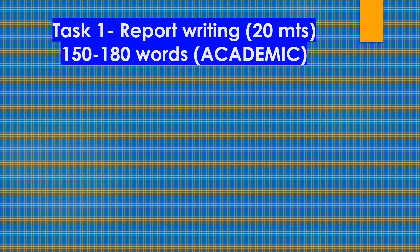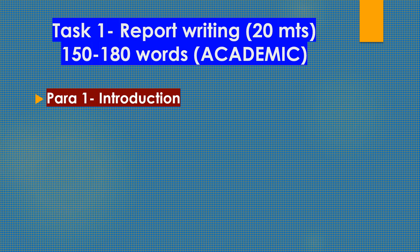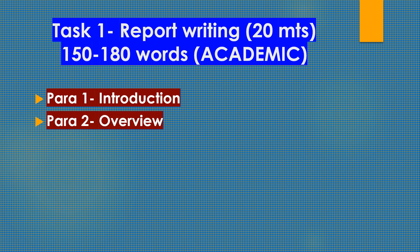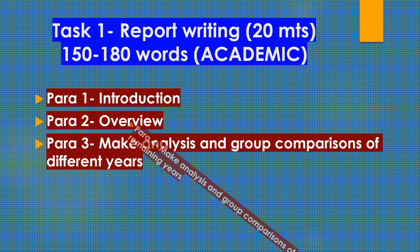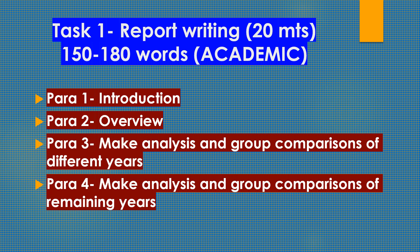Let's take a look at task 1 report writing: 20 minutes, 150 to 180 words, academic. We are going to segregate four different paragraphs. Paragraph 1 is an introduction. Paragraph 2 is an overview. Paragraph 3 is making analysis and group comparisons of different years.